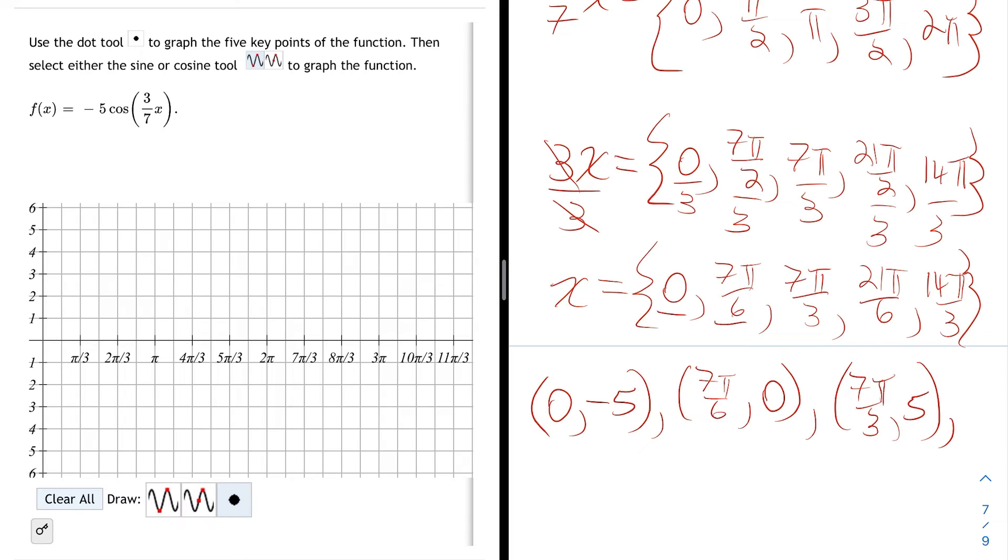Then the next point is 21π/6. 3 goes into 21 seven times, and 3 goes into 6 twice. So 21π/6 is really simplified to 7π/2, and that's going to be another x-intercept. And the last of the 5 key points is at 14π/3, and that's a minimum again at negative 5.